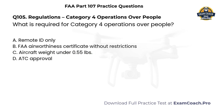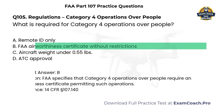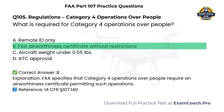Regulations. Category 4 operations over people. What is required for Category 4 operations over people? A. Remote ID only. B. FAA Airworthiness Certificate without restrictions. C. Aircraft weight under 0.55 pounds. D. ATC approval. Correct answer: B. FAA specifies that Category 4 operations over people require an Airworthiness Certificate permitting such operations.